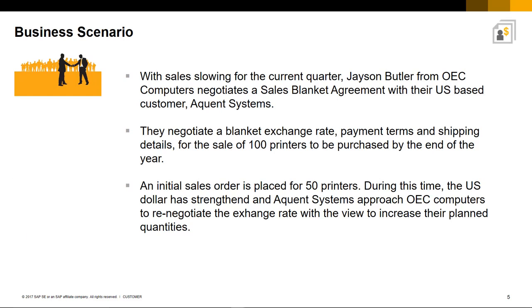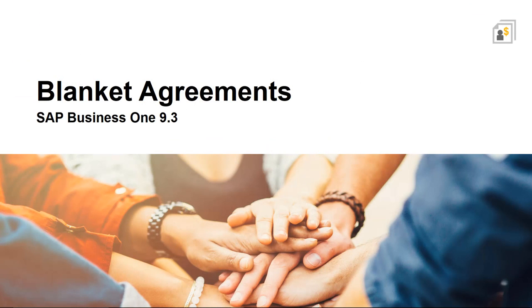So here is a typical business scenario. With sales slowing for the current quarter, Jason Butler from OEC Computers negotiates a sales Blanket Agreement with their US-based customer Acquiant Systems. They negotiate a blanket exchange rate, payment terms, and shipping details for the sale of 100 printers to be purchased by the end of the year. An initial sales order is placed for 50 printers. During this time, the US dollar has strengthened and Acquiant Systems approaches OEC Computers to renegotiate the exchange rate with the view to increase their planned quantities. So let's have a look at this business scenario in SAP Business One Release 9.3.